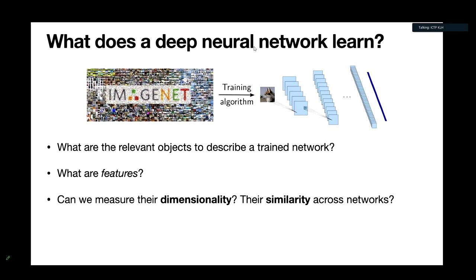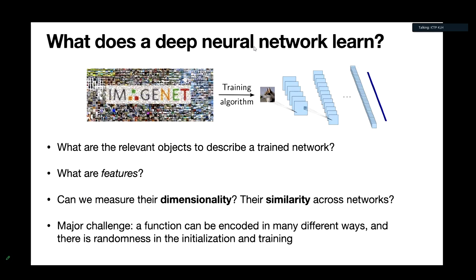If we had tools like this, we could start to explore what has been learned. But there's a major challenge: a function can be encoded in many different ways in a network — we have lots of symmetries. Permutation symmetry is one, but there are in fact more symmetries than this, and there's randomness in the initialization and training. So there's a lot of noise, and if you try to look at the parameters it's hard to see what's going on.